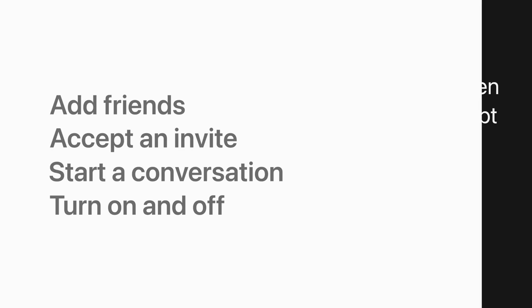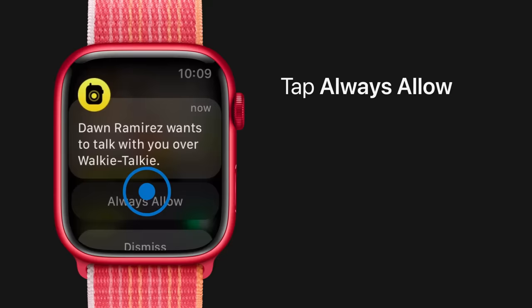To accept an invite from a friend, tap the notification that appears on your Apple Watch screen. Then tap Always Allow to receive messages from your friend while the app is on.